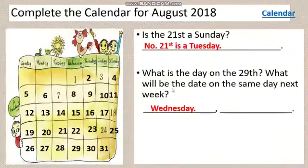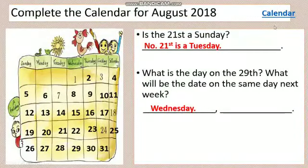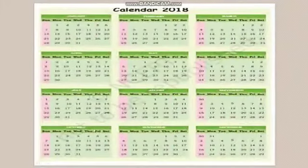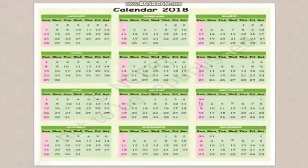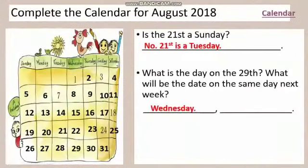Next: what will be the date on the same day next week? So after 29th, the next week is outside this month. After August comes September. Looking at the calendar for August and September — the week ends at 29th, and the next Wednesday falls on 5th September. So your answer is 5th of September.